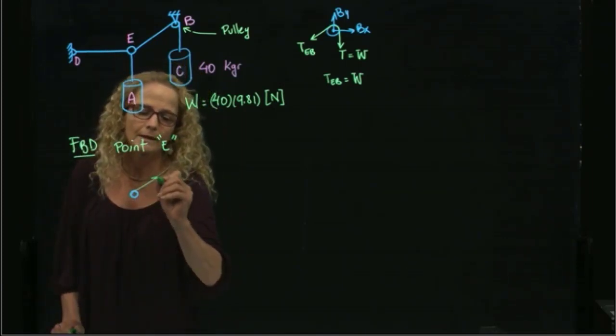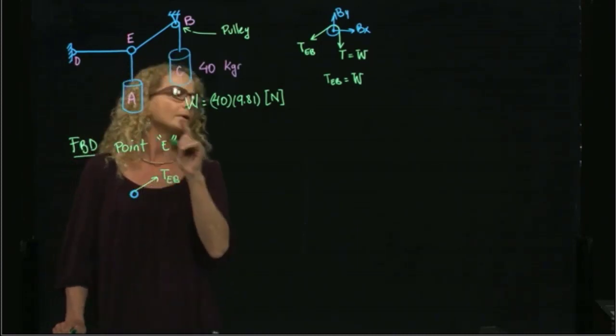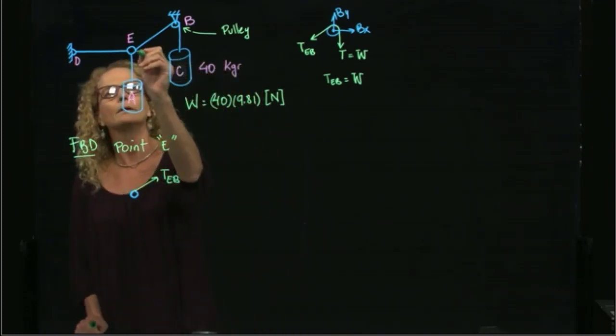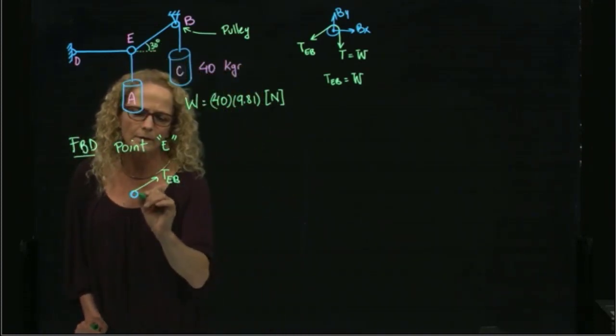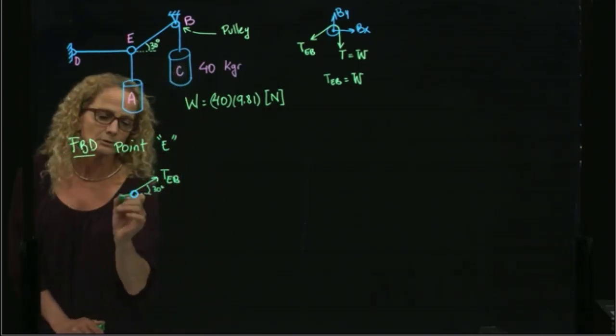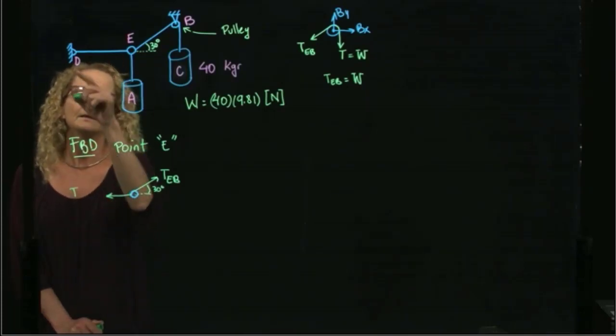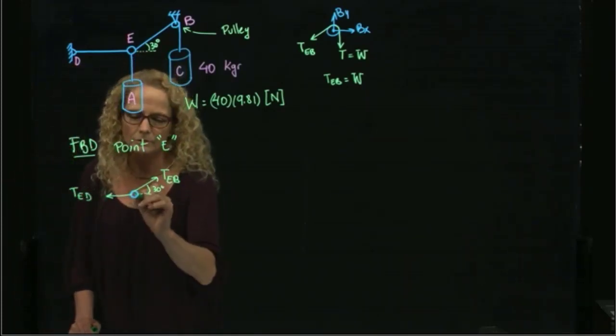So I have the tension, T Eb, that we already know. And we have this angle, this angle over here is 30 degrees. So this angle over here is 30 degrees. Then we have the tension, T Eb, and finally we have this tension over here.